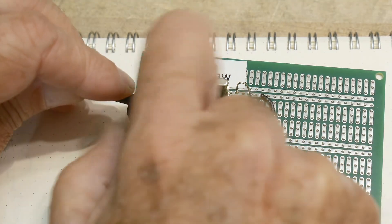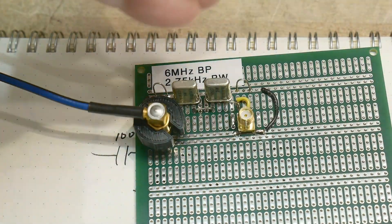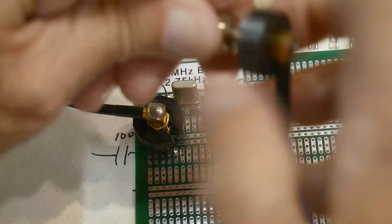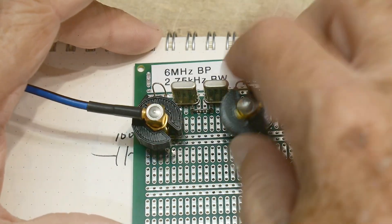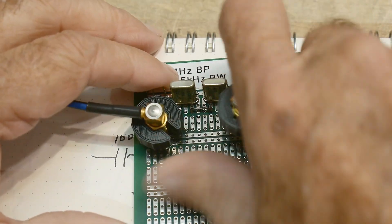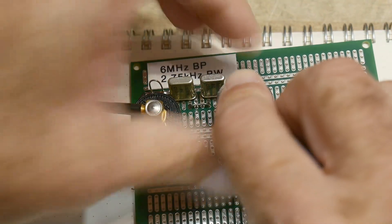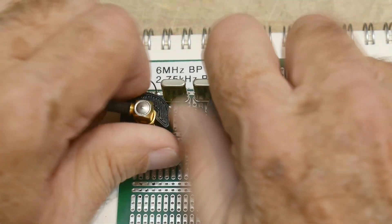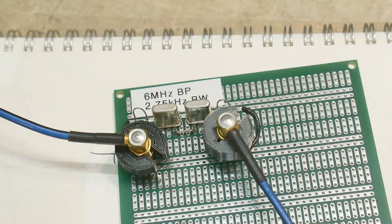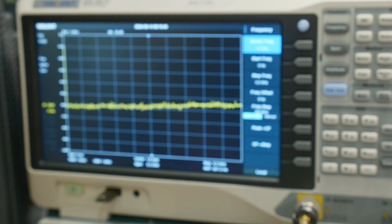We will just attach the tracking generator to this side and connect the spectrum analyzer input to this side. There we have a through measurement we'll be making on our spectrum analyzer.